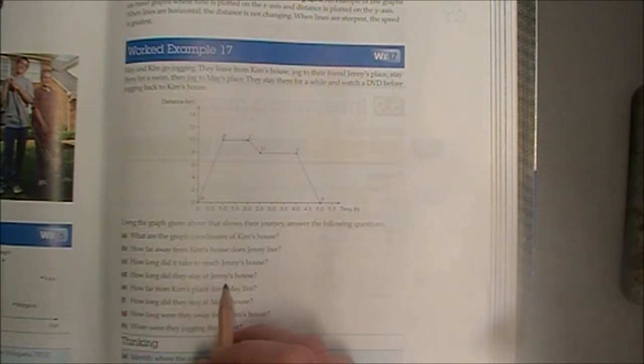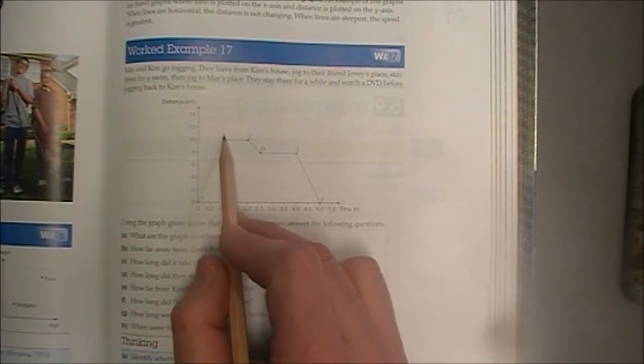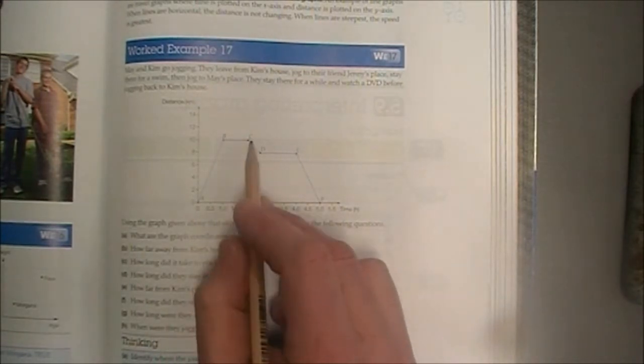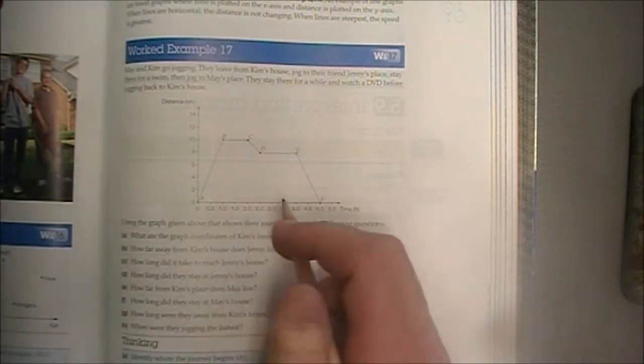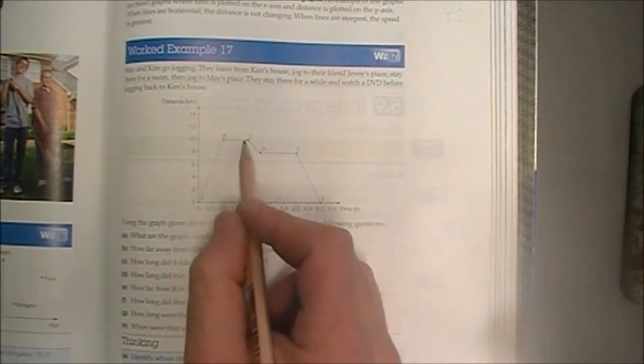D. How long did they stay at Jenny's house? So they stayed at Jenny's house from 1 hour to 2 hours. So that's a distance of 1 hour. So they stayed there 1 hour, and that's that horizontal line.